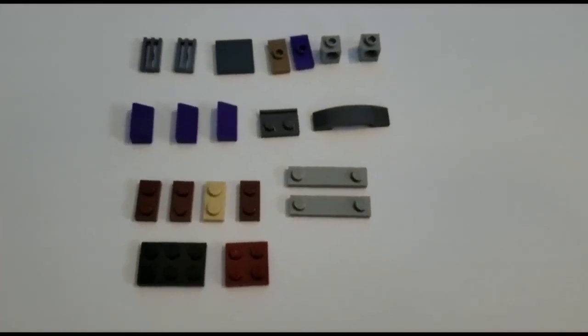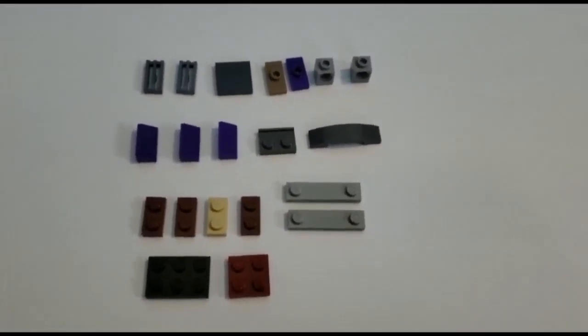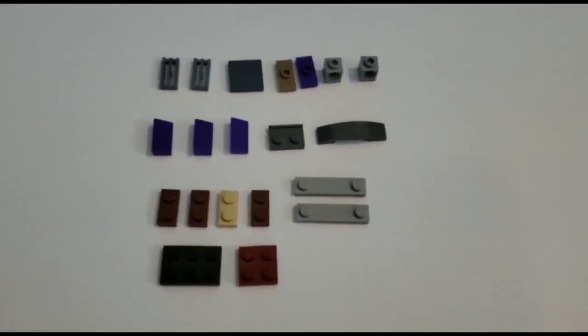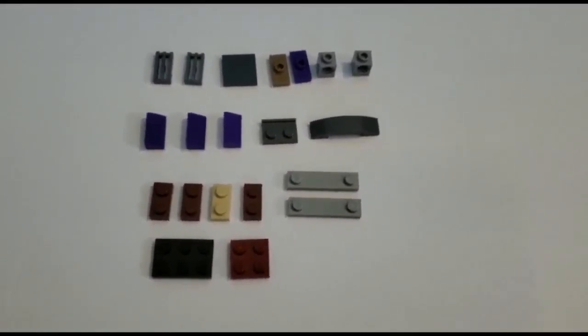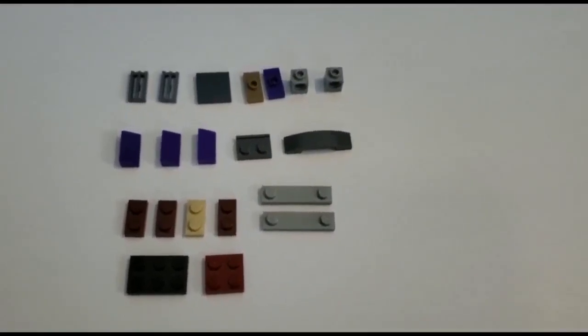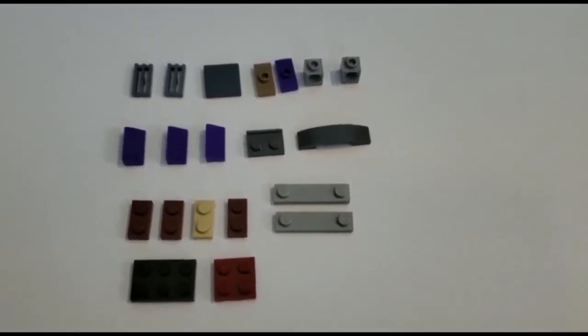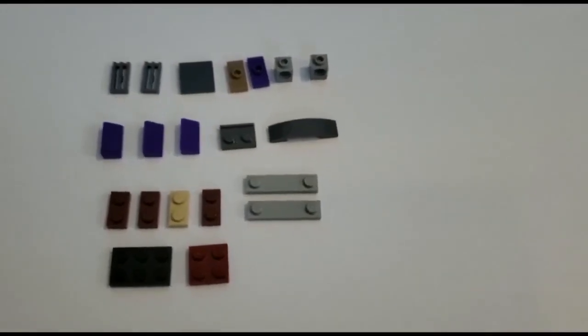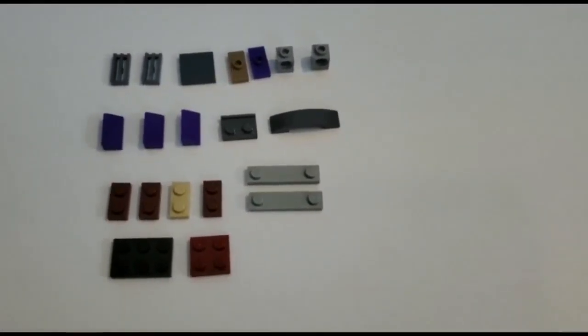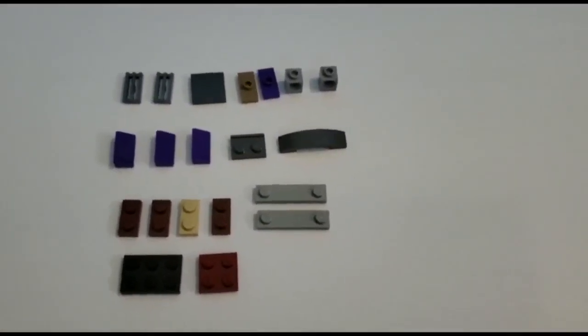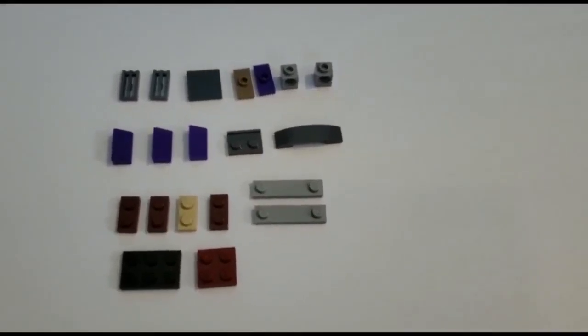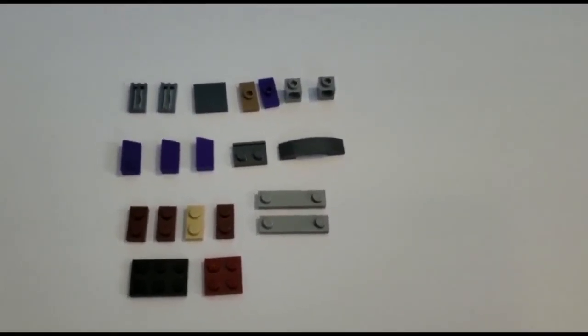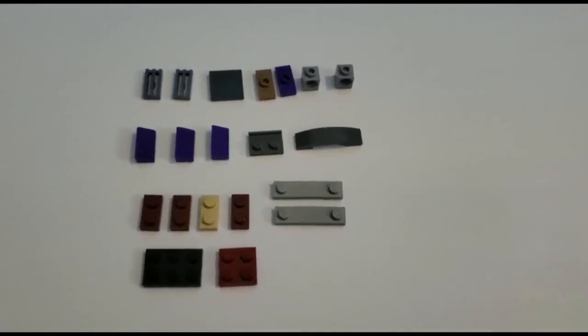These are the pieces you need: two grilled pieces, one flat slope, two flat slopes with a stud hole in them, two Technic bricks, three cheese wedges, one 2x1 with a thing at the top, an arch, four 2x1s, two 4x1s with studs on the corners, one flat 2x3, one flat 2x2. Let's build.